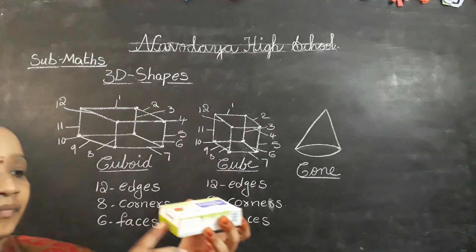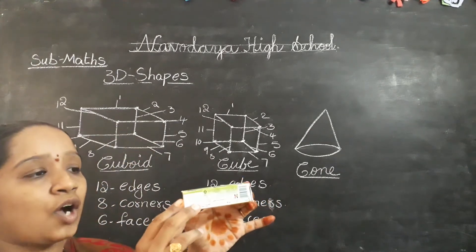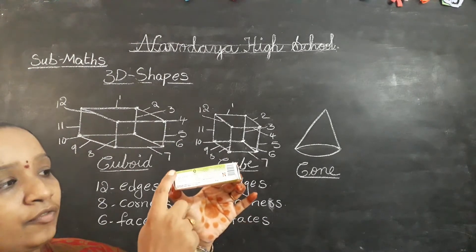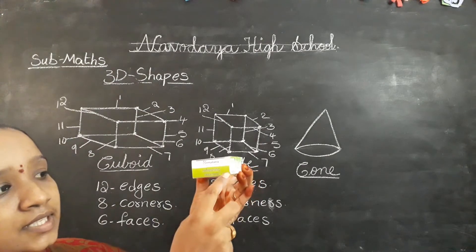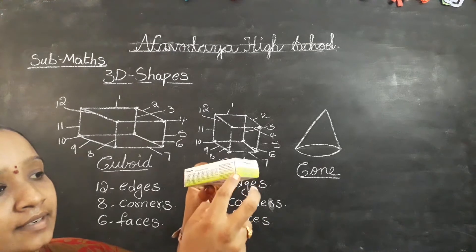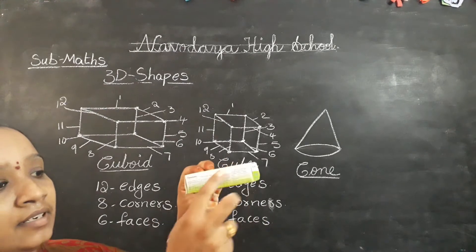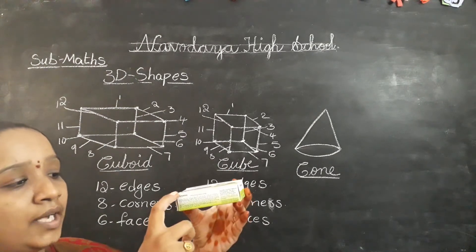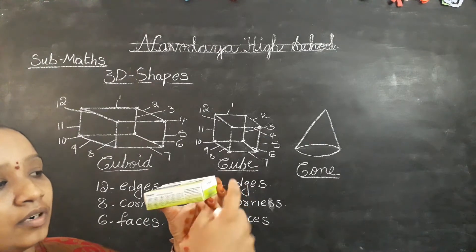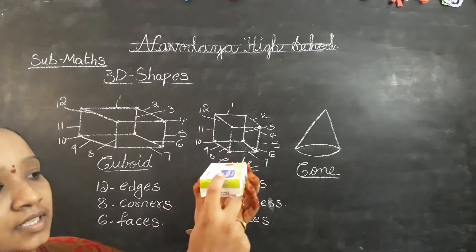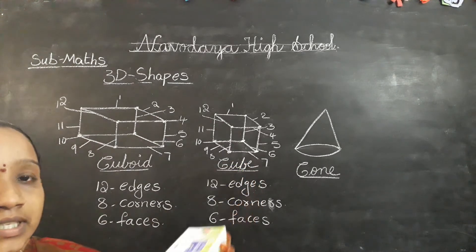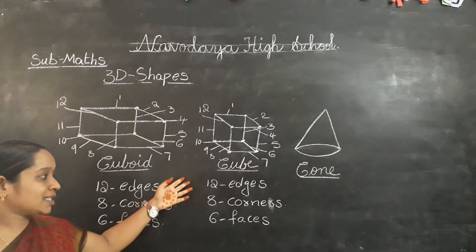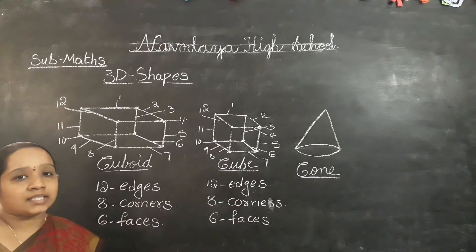Look at this cuboid. Count the edges: 1, 2, 3, 4, 5, 6, 7, 8, 9, 10, 11, 12 — 12 edges. Now corners: 1, 2, 3, 4, 5, 6, 7, 8 — 8 corners. Same applies if you take a cube like a dice or an ice cube — you can count the edges and corners the same way.